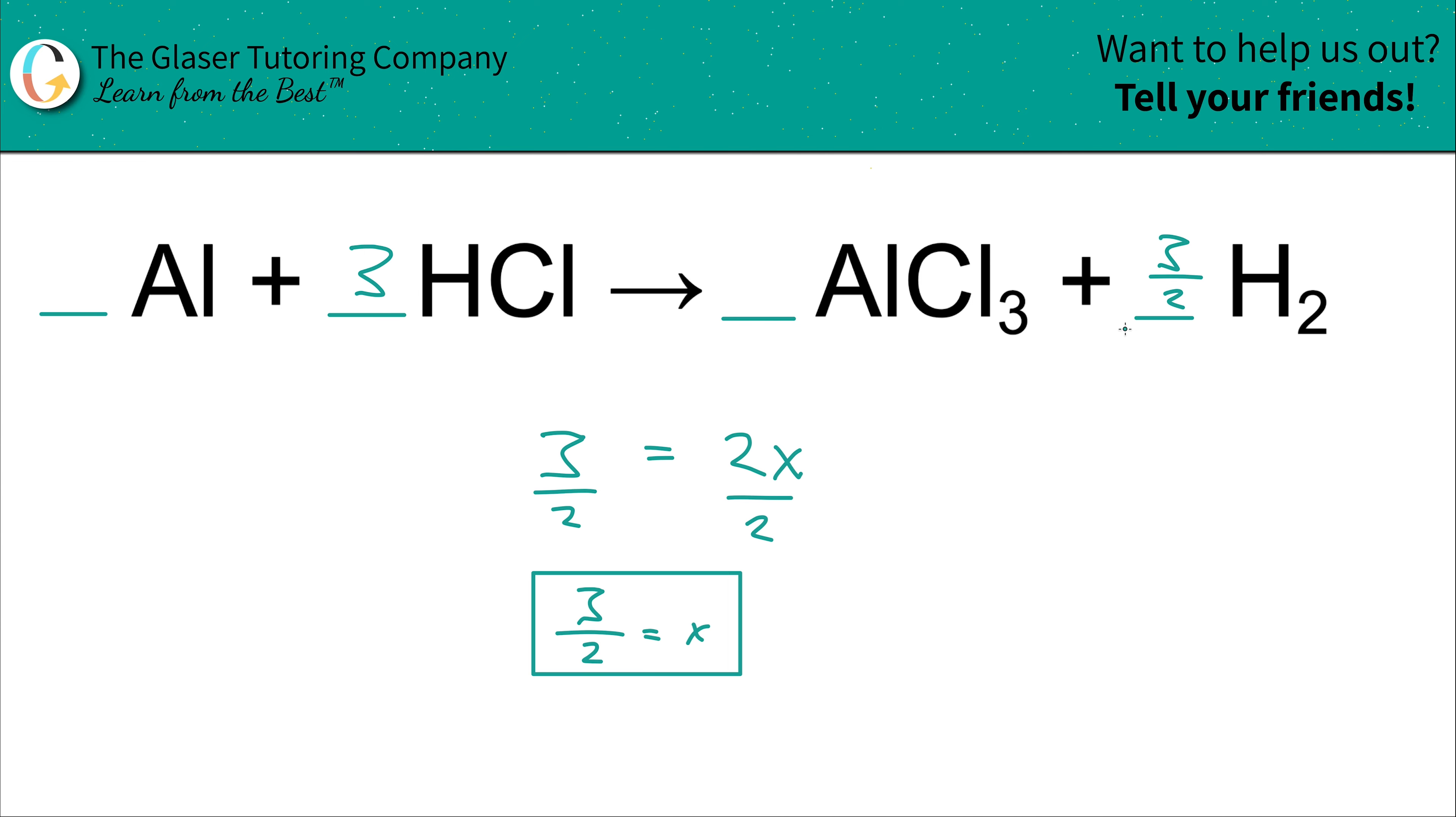So what we need to do now is we need to look at the denominator. That's why I leave it in fractional form. Whatever this denominator is, is what you're going to multiply every single coefficient now by in order to obtain your balance equation. So you can plug in a little one placeholders for now, and then just multiply it by the two because this was the denominator value.